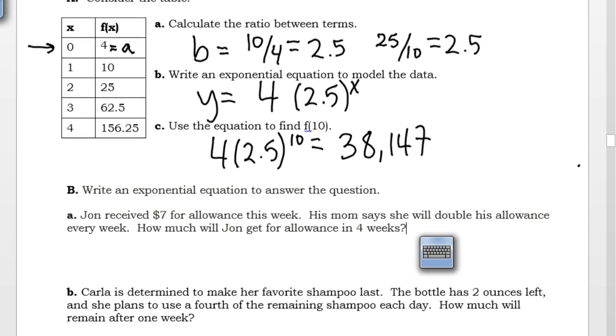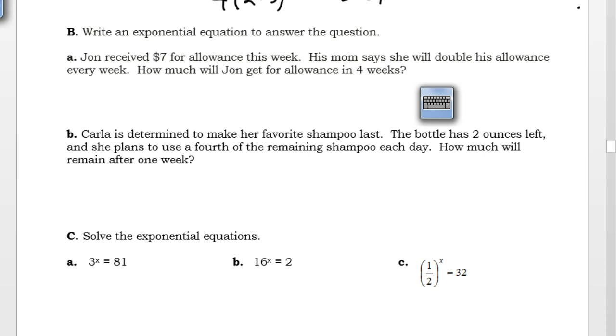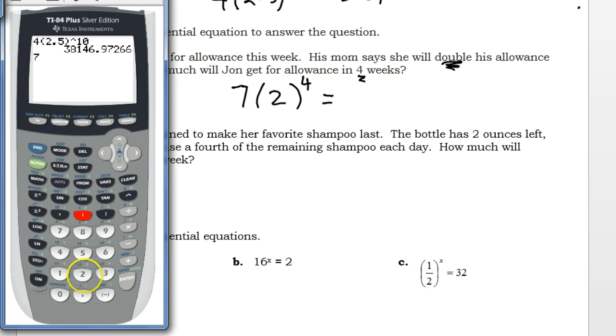Continuing on to example B, write an exponential equation to answer the question. Part A says, John received $7 for allowance this week. His mom says he will double his allowance every week. How much will John get for allowance in 4 weeks? So I need to know two things. I need to know where I'm starting and what my ratio is. I started with $7. And my ratio is that I am doubling. Doubling means we're multiplying by 2. So my equation will be 7 times 2 to the power of 4. It looks like John will be getting $112 for allowance in 4 weeks.